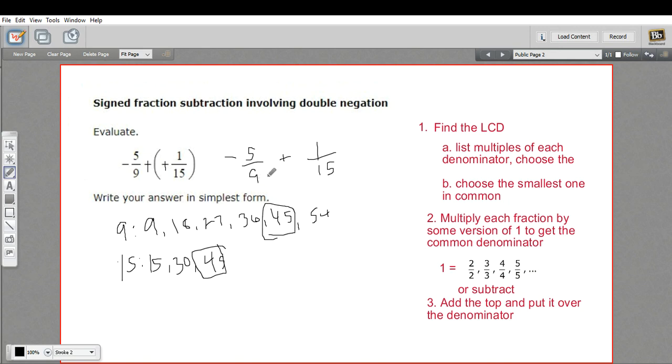So what do we need to multiply the 9 by to get 45? Well, that would be 5. So that means we multiply the fraction by 5 over 5. And what do we need to multiply 15 by to get 45? That's going to be 3. So we multiply here by 3 over 3.